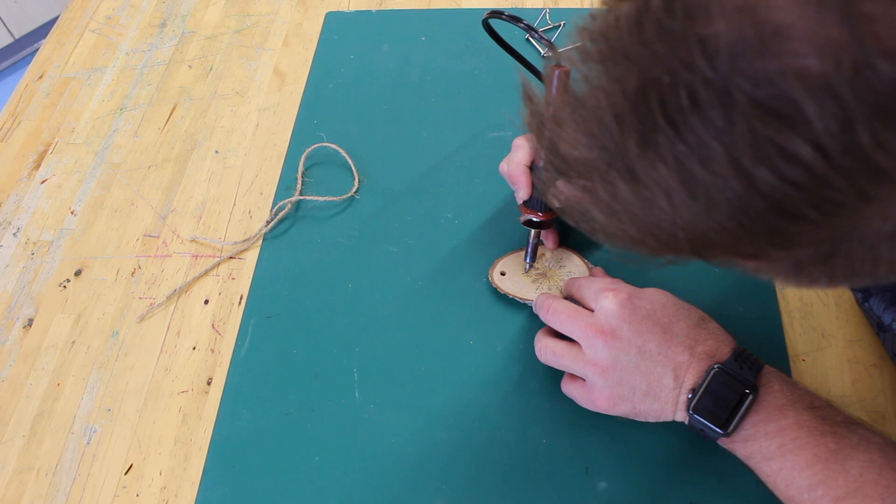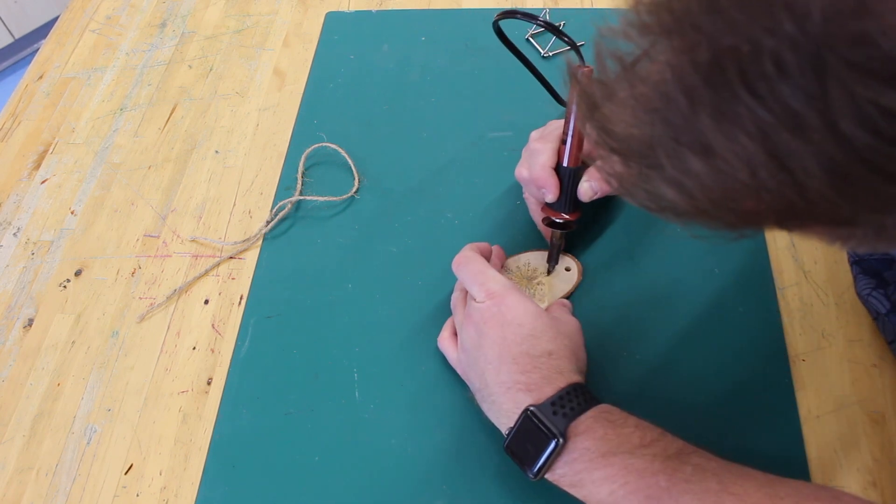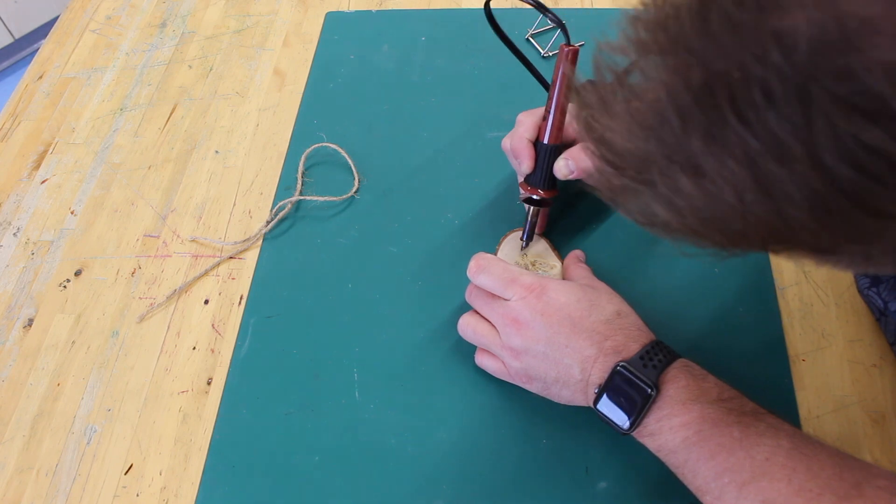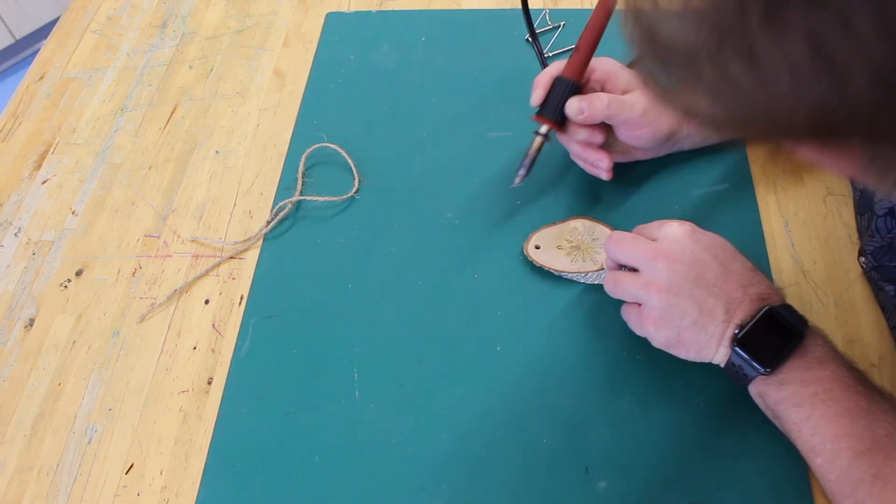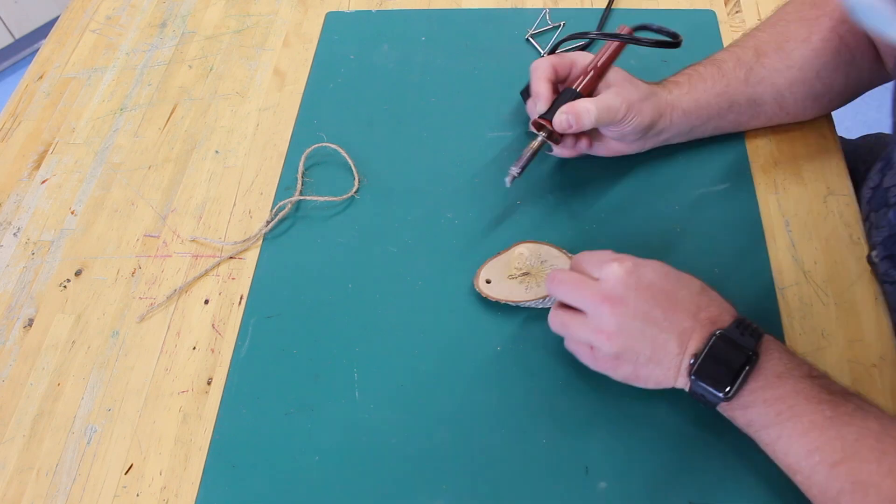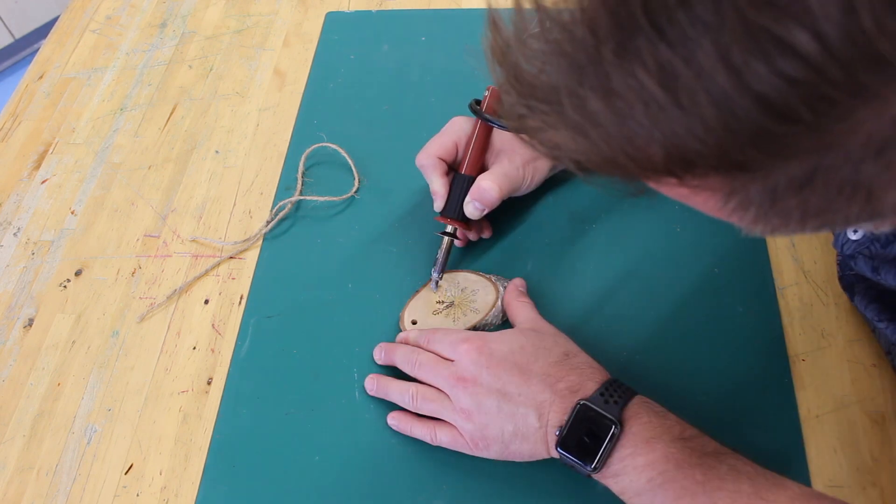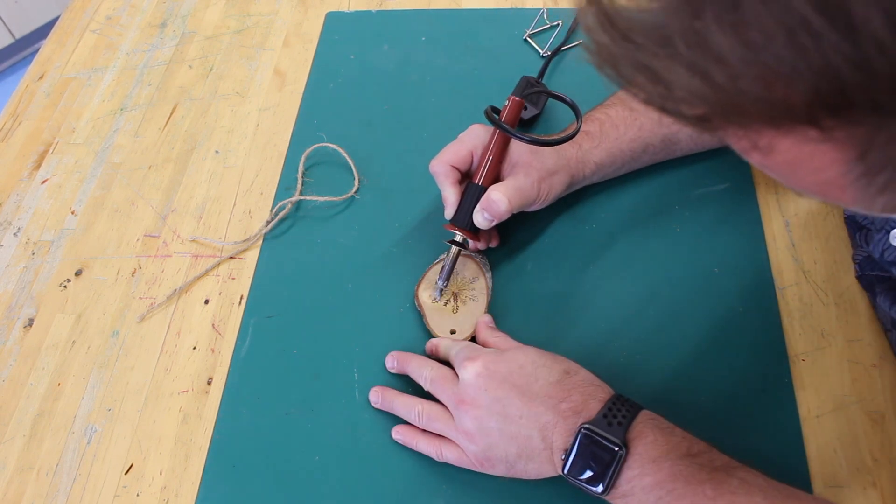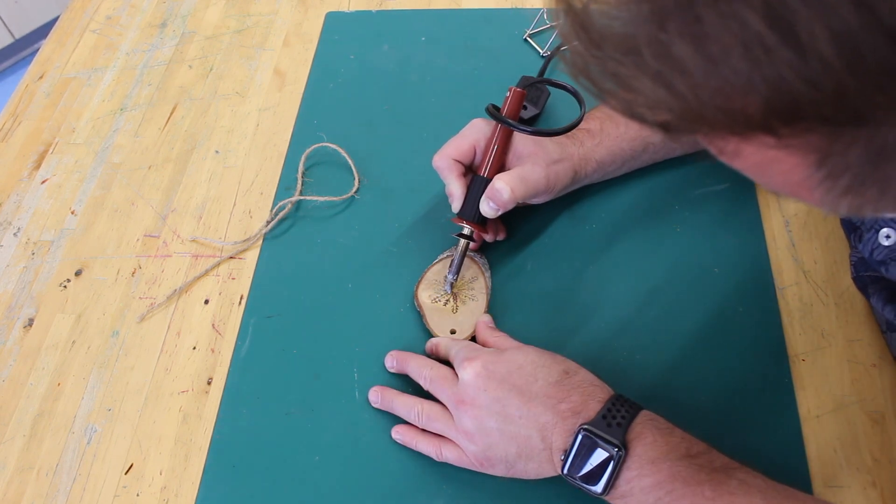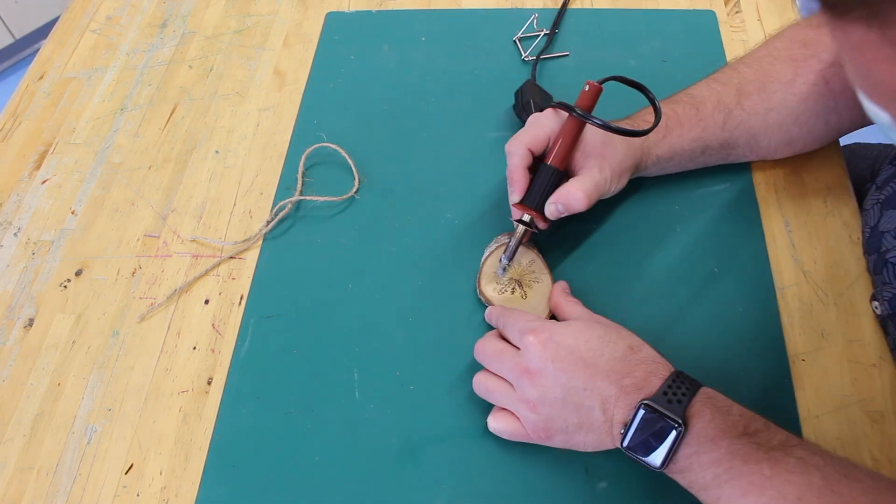Then using the wood burning tool, I will slowly and carefully draw my image following the black tracing left by the carbon paper. Always making sure again never to let my finger go past the flange on the pen, and always being cognizant of where the wire cable is, keeping it out of my way to avoid mishaps, and always putting the pen back in the holder when not in use.